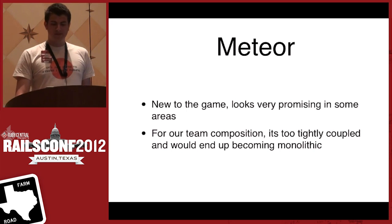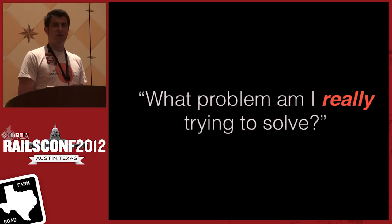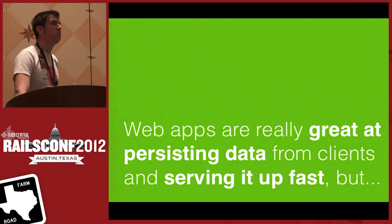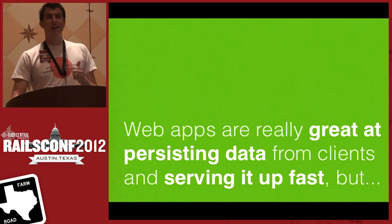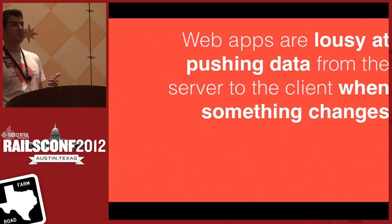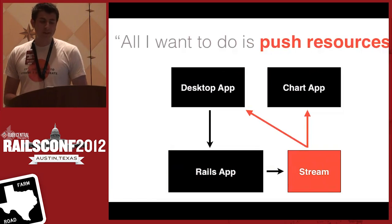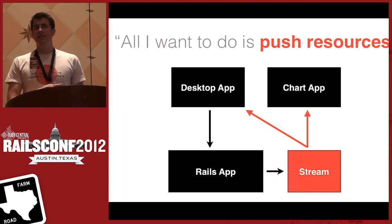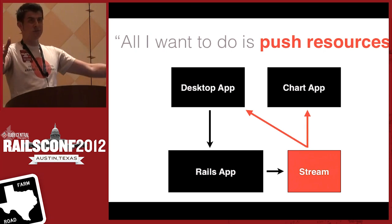After evaluating all of these frameworks, I couldn't quite find the one I was looking for, so I took a step back and asked myself: what problem am I really trying to solve? Web apps are really great at persisting data and serving it up fast — if you POST something and use Backbone to ask for a JSON resource, you get a response back quickly. What web apps are bad at is pushing data to Backbone models or Ember.js models on the client. So I said, why don't I just solve that problem? I'm not interested in emulating a WebSocket — I already have communication to and from the server. What I don't have is the ability to push resources to clients.